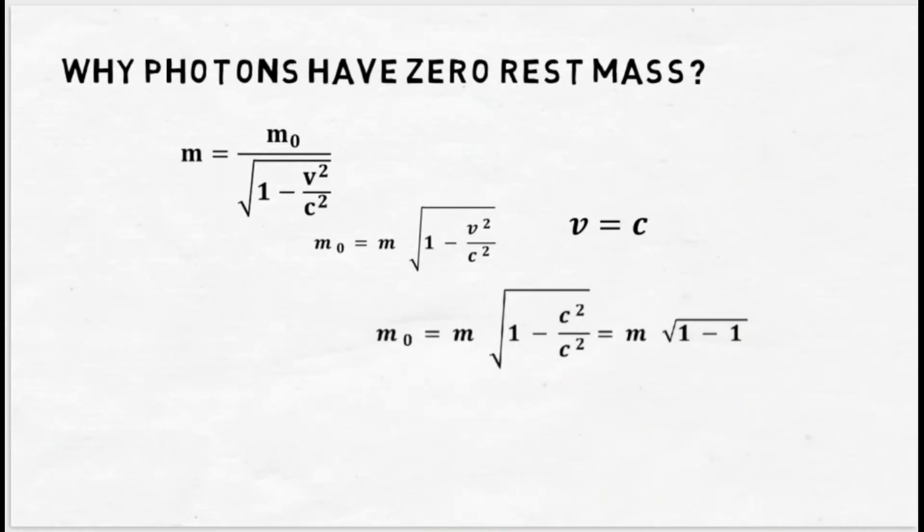Now when velocity of photon is equal to the velocity of light, we will have c squared divided by c squared and dividing the c squared by c squared, we will get 1. So we will have 1 minus 1 is equal to 0 and the rest mass will become m0 is equal to m under root 0.